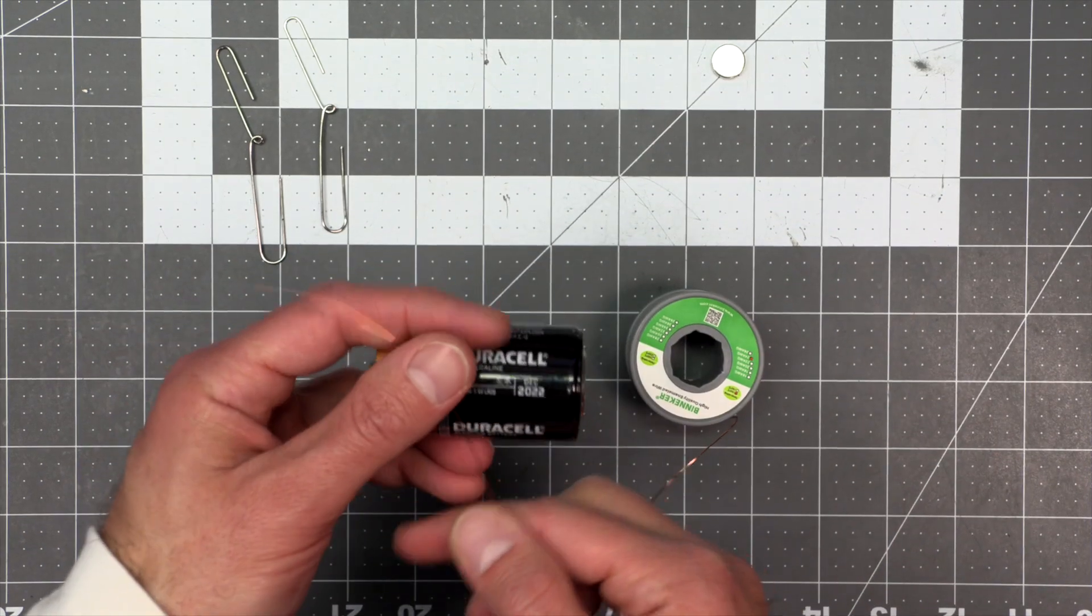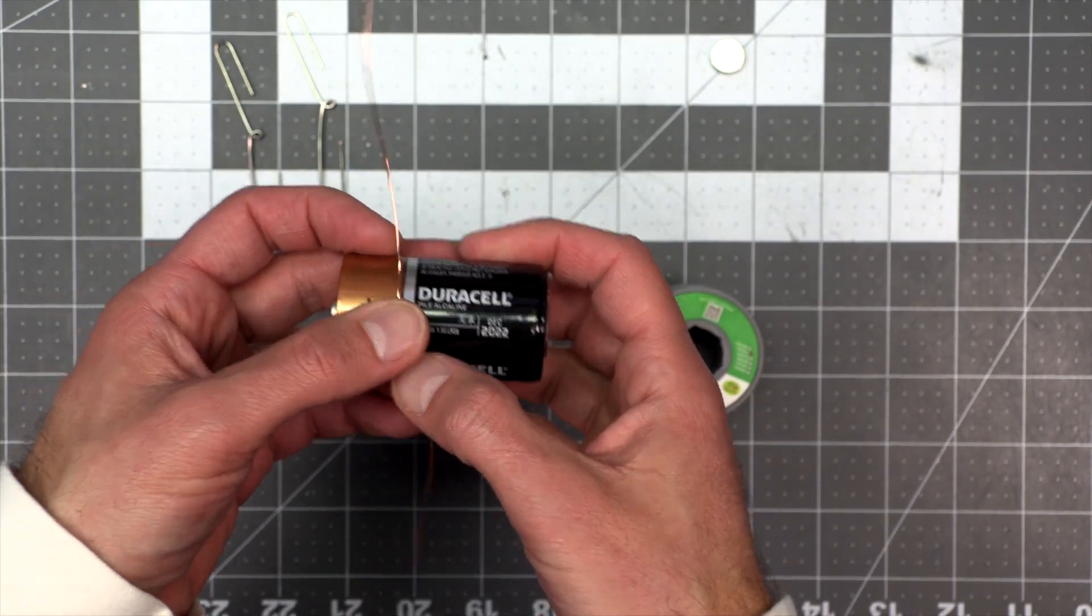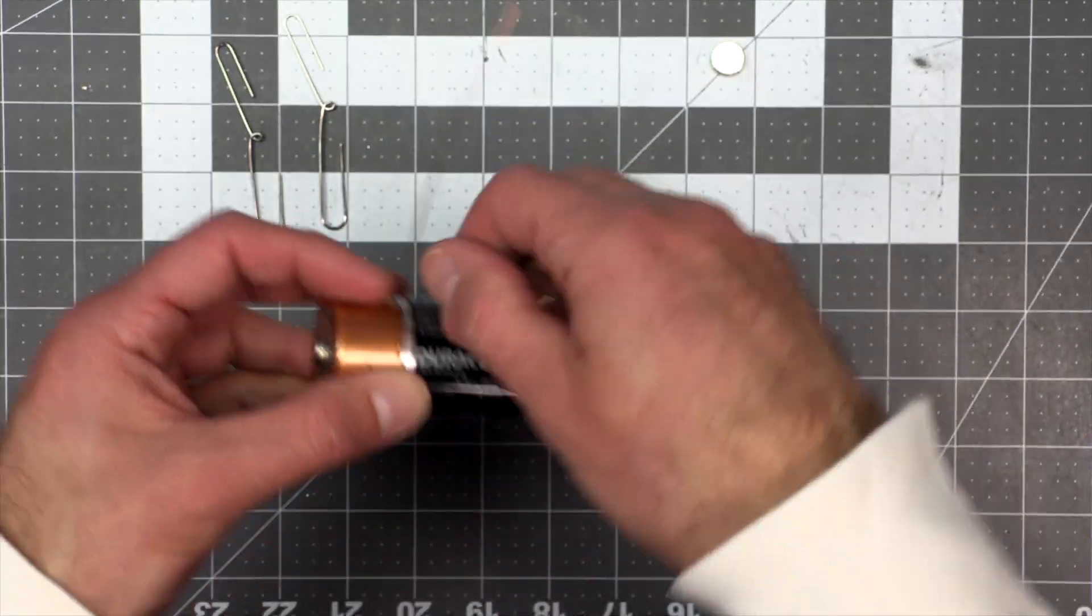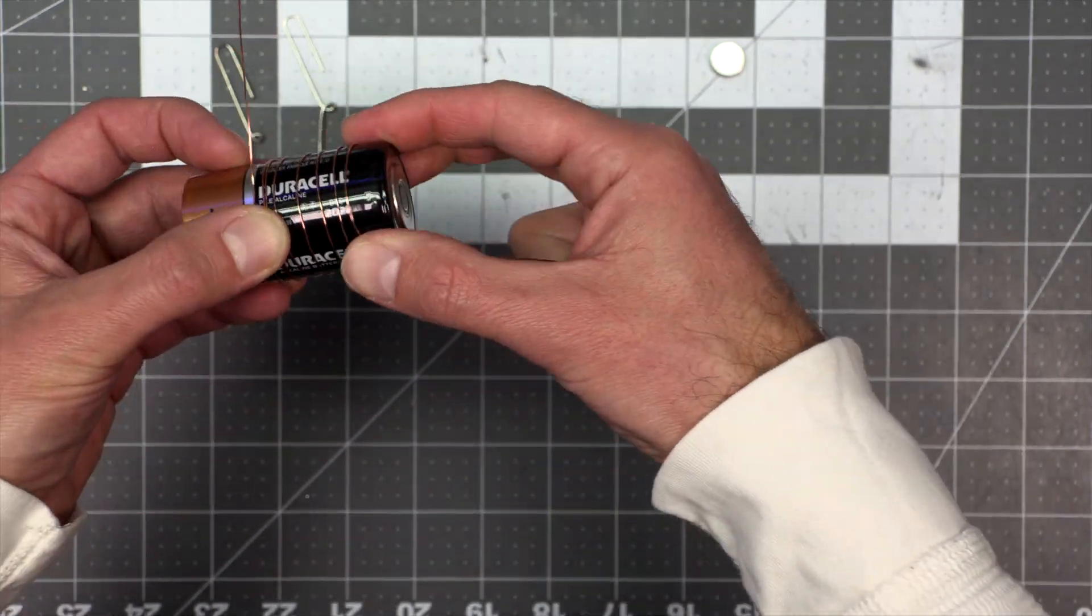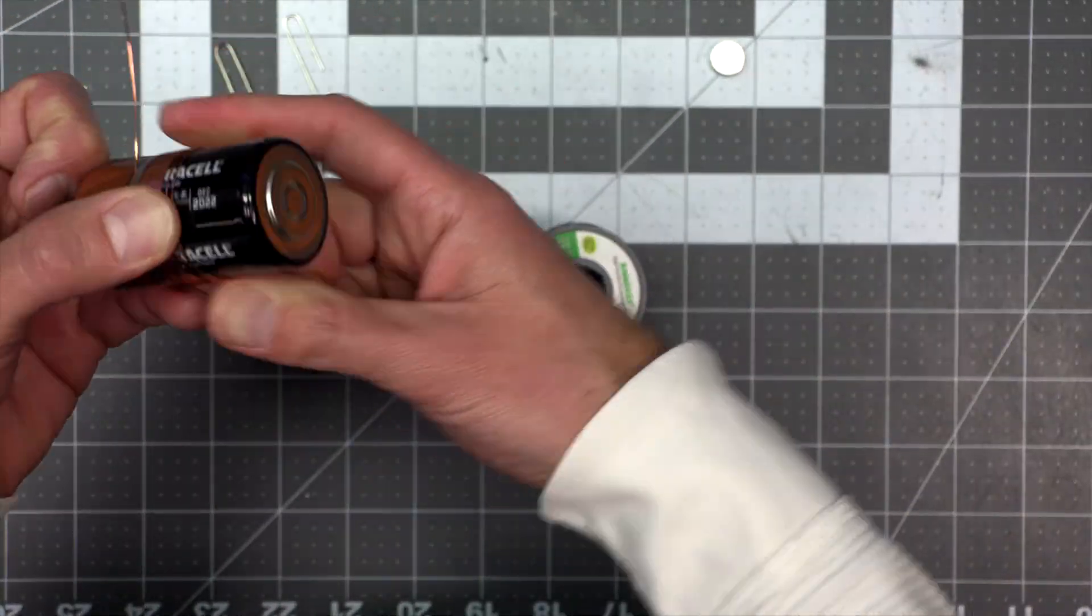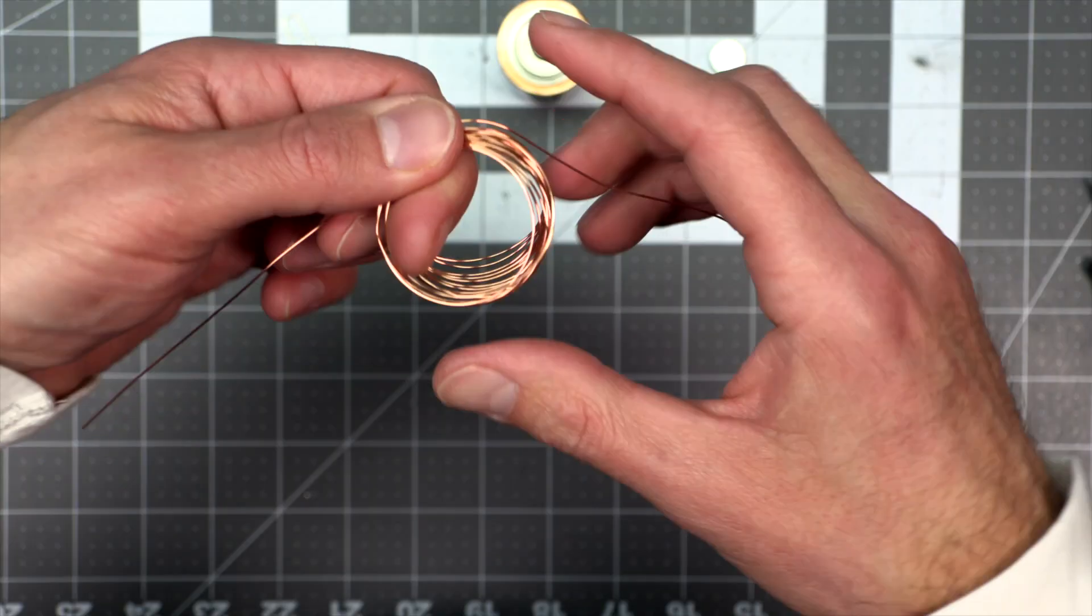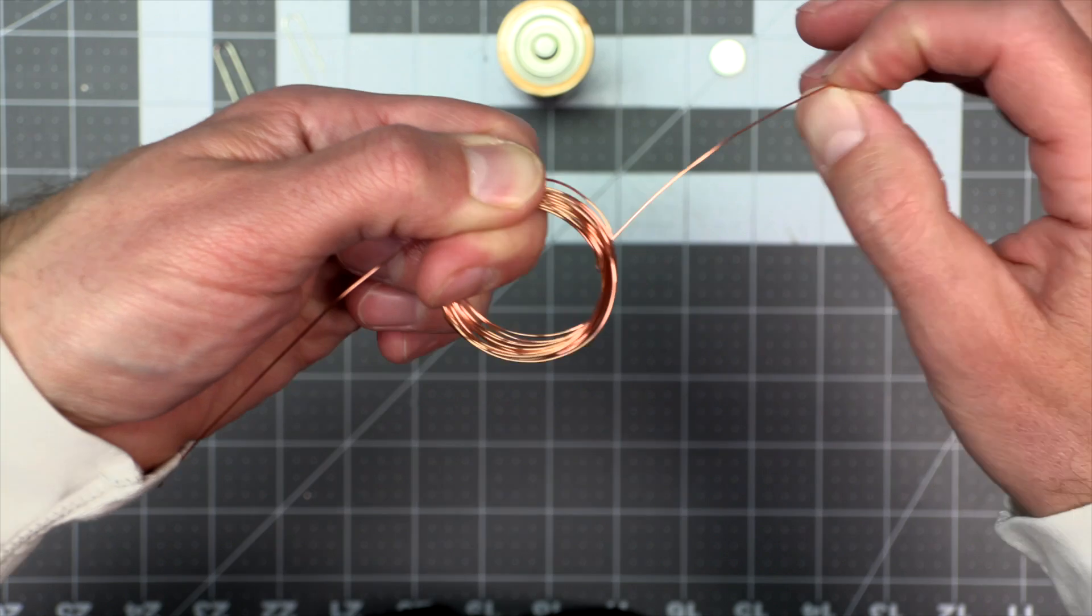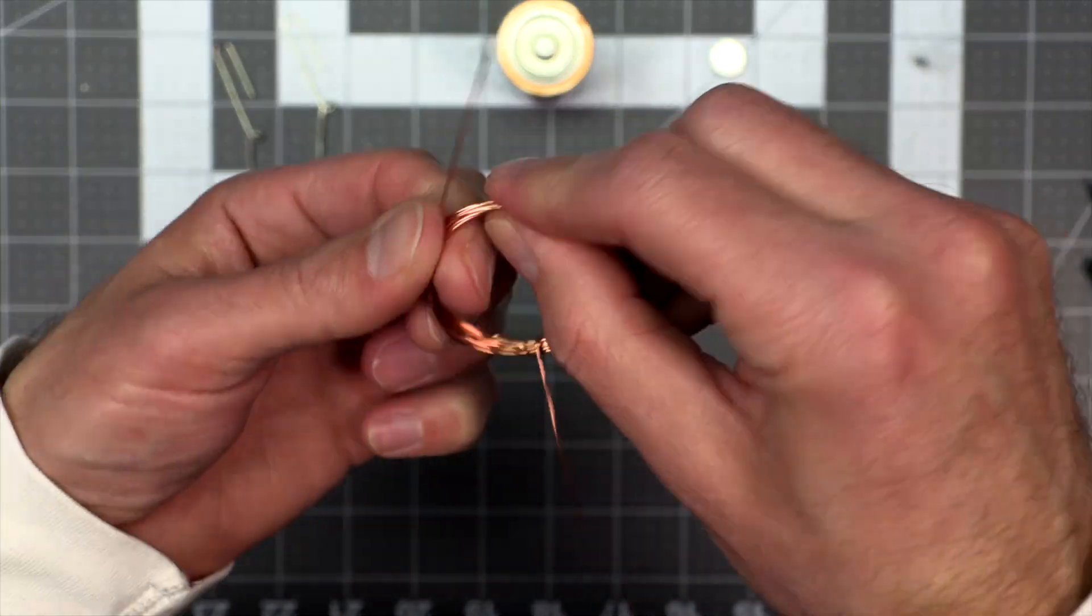Then take your D cell battery and wind your copper wire around it, making a circle. Make sure you leave a few inches of wire protruding from your wind. We'll use this later for the motor. I wind the wire 15 times around the battery, but you can experiment with different number of winds and see how it affects your motor. Again, leave a few inches on the end before you cut it. Then slide off your coil from the battery and take the ends and wind it around your coil to secure the wires into place like this.